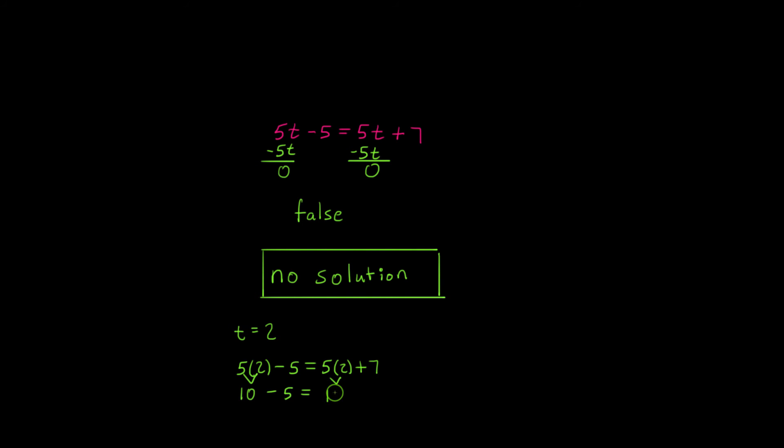And 5 times 2 over here will give me 10 plus 7 on the other side of the equation. And I think you can probably start to see this now. 10 minus 5 is 5. 10 plus 7 is 17. These are not equal. 5 does not equal 17. There is no solution for this statement.